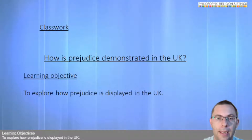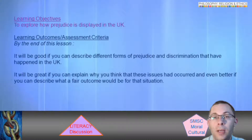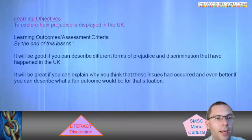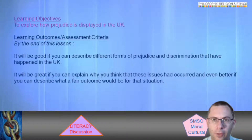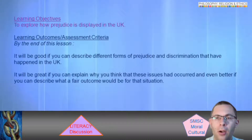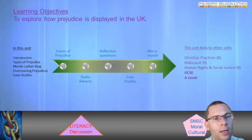It's going to be good if you can describe different forms of prejudice and discrimination that have happened or do happen in the UK. Great if you can explain why you think these issues have occurred, and even better if you discuss what a fair outcome might be for that situation. That's going to be a little bit harder to do at home than doing it in groups in school, but we'll make it work.